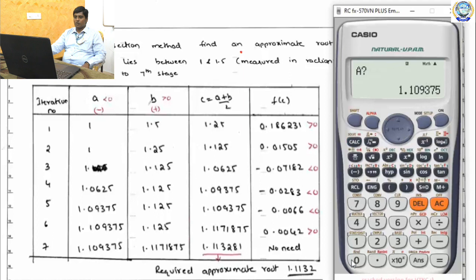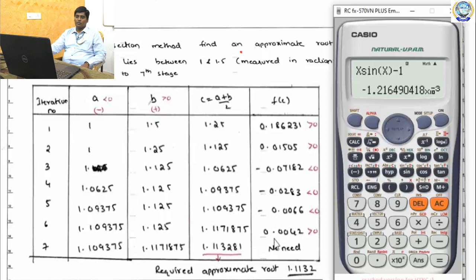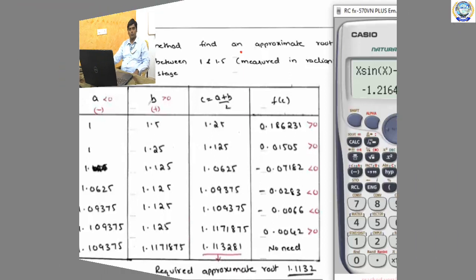Iteration 7: a = 1.109375, b = 1.1171875. Average c₇ ≈ 1.11328125, approximately 1.1132. Up to two decimal places the value is repeating, so our required approximate root is 1.1132. You can verify by substituting back — it will give a negative value close to zero.